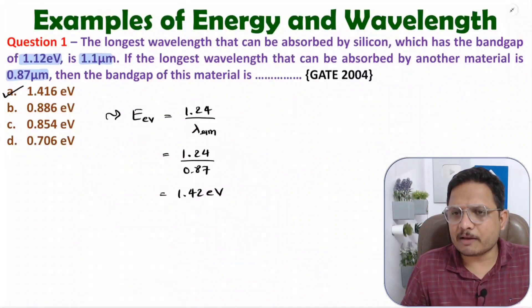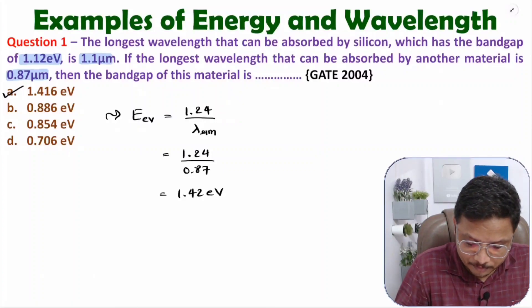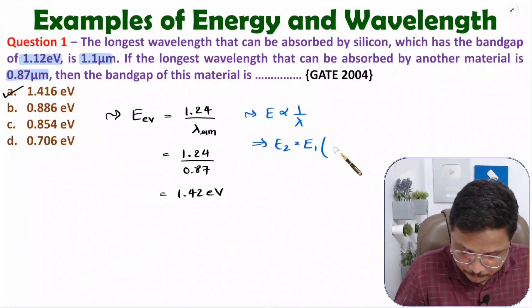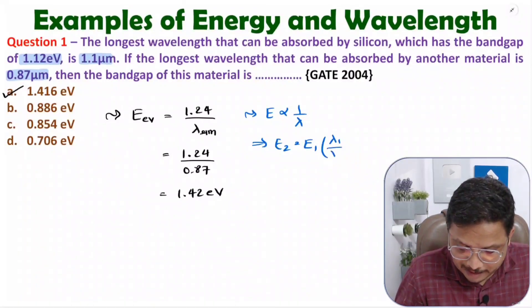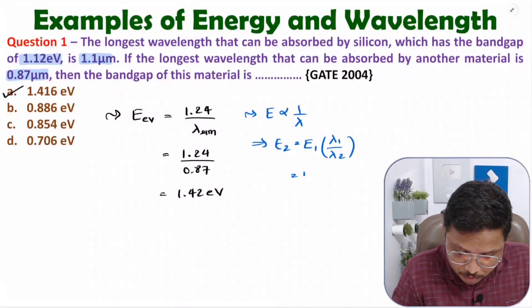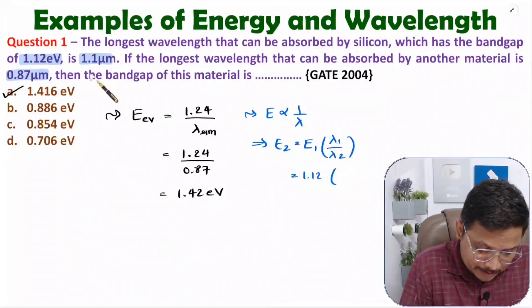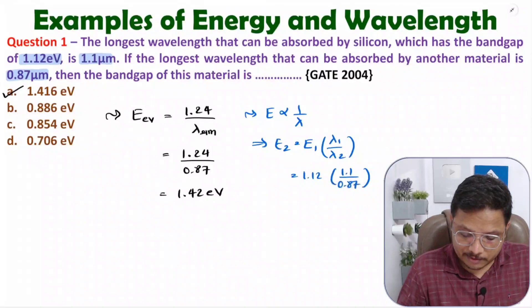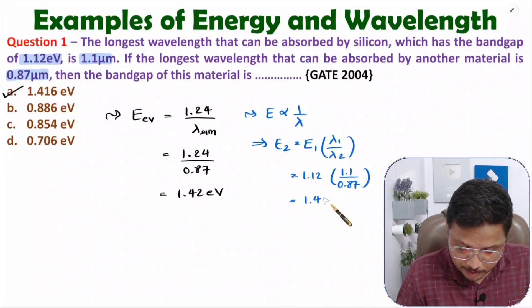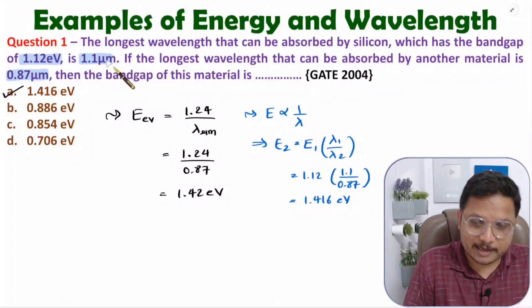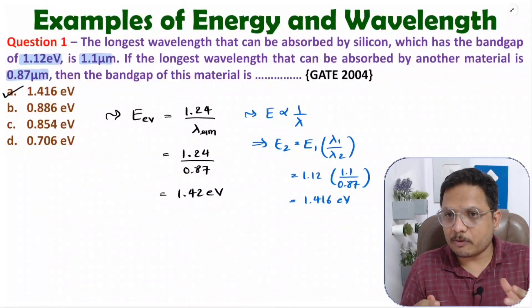I have seen another way by which students are also solving this same question. Since energy is proportional to 1/lambda, you can say E2 = E1 × (λ1/λ2), where E1 is related to silicon, that is 1.1 eV, λ1 is 1.1 micrometer, and λ2 is 0.87 micrometer. If you solve this, you get the same answer: 1.416 electron volt. That is how you can also solve this question, but you don't need the silicon data — it is extra data given in the question. Let us move on to the second interesting question now.